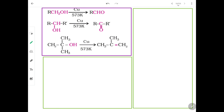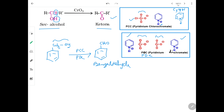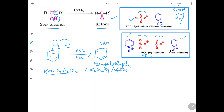So benzaldehyde is formed here. PCC and PDC are mild oxidizing agents — they only convert alcohols to aldehydes and ketones; they will not take them further to acids. To go toward acids you need strong oxidizing agents: KMnO4 with H2SO4 (potassium permanganate acidic), K2Cr2O7, or Na2Cr2O7 with H2SO4. These strong oxidizing agents can convert aldehydes and ketones also into carboxylic acids.